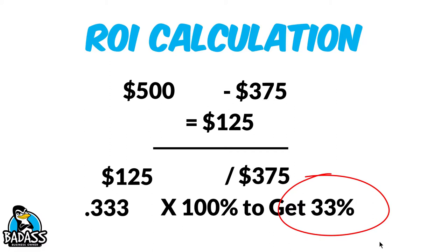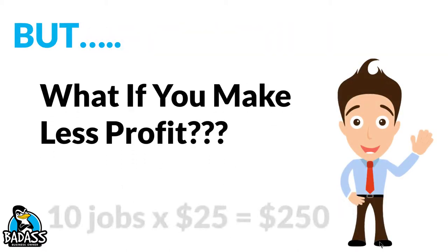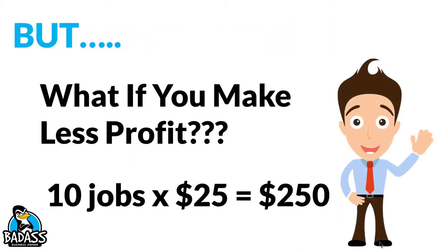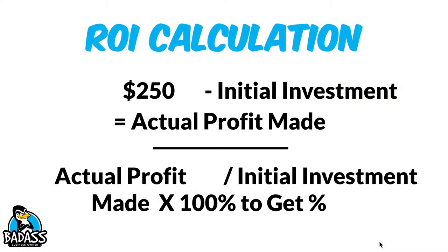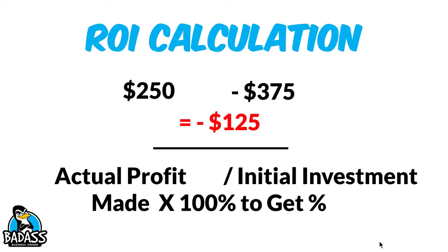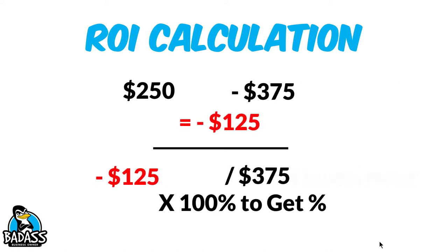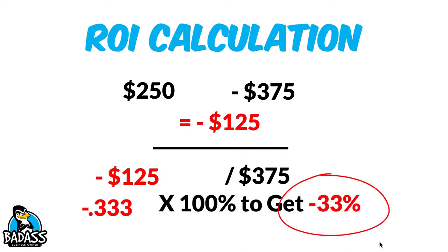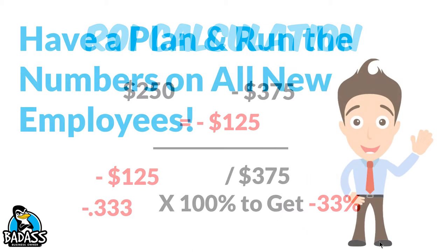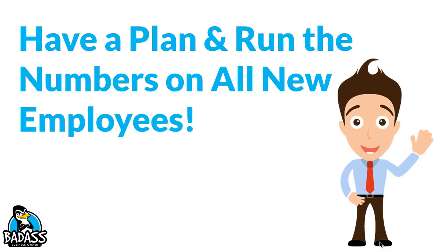Not too bad — not fantastic, but not too bad. However, if those new jobs only create $25 in profit, the outcome is completely different. Ten jobs times $25 is $250 in new weekly profits, minus the $375 investment in Tom — a loss of $125. That loss of $125 divided by $375 gives negative 0.333, times 100%, and we find a negative 33% return on hiring Tom. Can you see why it's important to plug in your numbers before hiring a new employee?